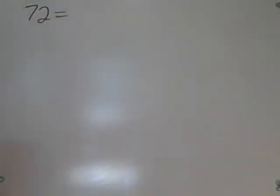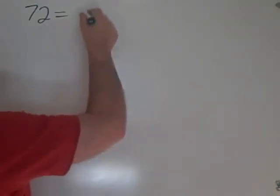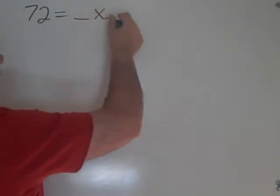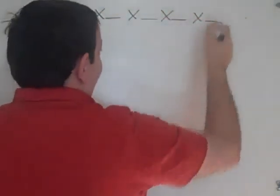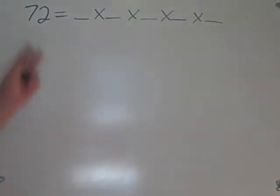The first question you might ask is, what is prime factorization of a number like 72? Well, it is the product of prime numbers that actually multiply out to 72.